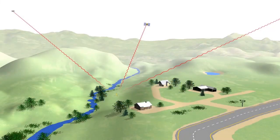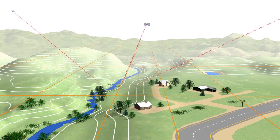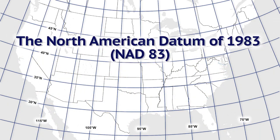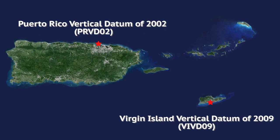The North American Datum of 1983, NAD83, is the nation's horizontal or geometric datum. It provides latitude and longitude and some height information. The North American Vertical Datum of 1988, NAVD88, is the nation's vertical datum, providing elevation information relative to a reference surface defined by mean sea level. U.S. territories have separate vertical datums.